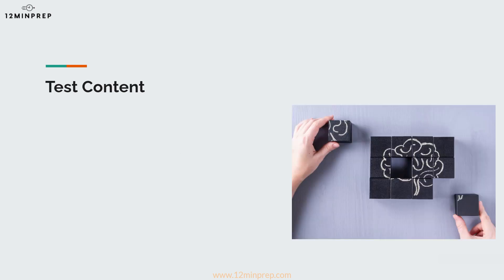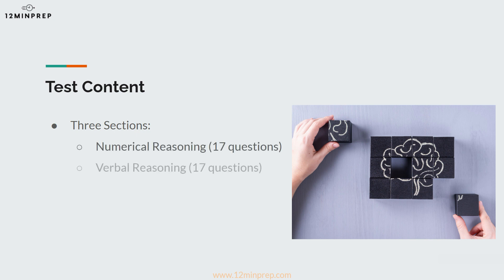The test is made up of three sections: numerical reasoning, verbal reasoning, and abstract reasoning. Each section contains approximately 17 questions, for a total of 51 questions.